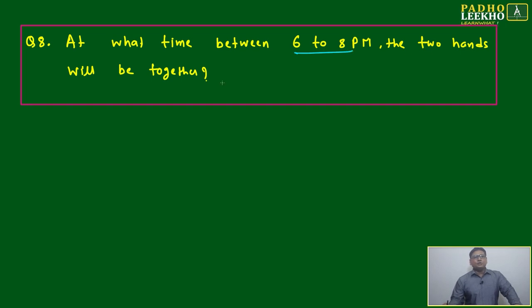Between 6 to 8 PM, the two hands will be together at which time? How do we calculate this? It is given, simple: h equal to 6.